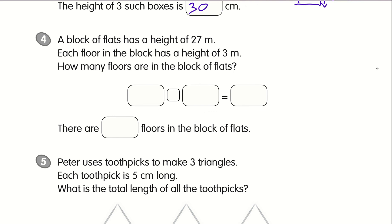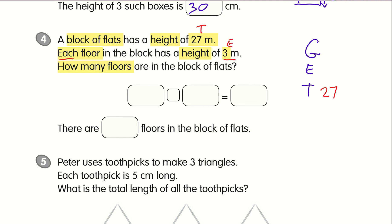A block of flats has a height of 27 meters. Each floor on the block has a height of 3 meters. How many floors are there in the block of flats? So again, we start with our G, E, T. The block of flats has a height of 27 meters — this represents the total, so total is 27. Each floor has a height of 3 meters, so E is 3.